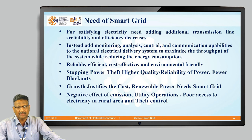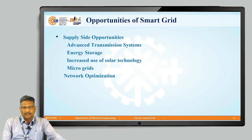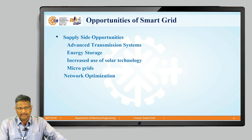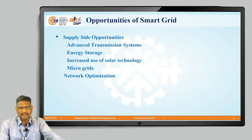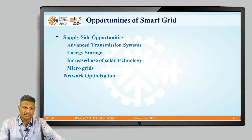It is necessary to implement renewable energy. There are negative impacts such as emissions, poor utility operation, poor access to electricity in rural areas, and threat control issues. There are opportunities on the smart grid from different horizons — particularly supply-side opportunities such as advanced transmission systems, energy storage for future use, increased use of solar technologies, micro grids, and network optimization.